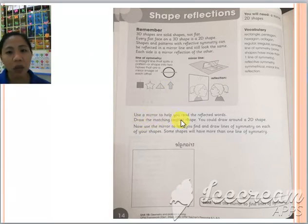Okay, use the mirror to help you read the reflected words. Draw the matching regular shape. You could draw around a twin shape. Now use the mirror to help you find and draw lines of symmetry on each of your shapes. Some shapes will have more than one line of symmetry.